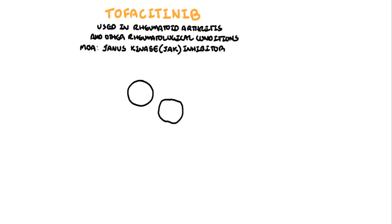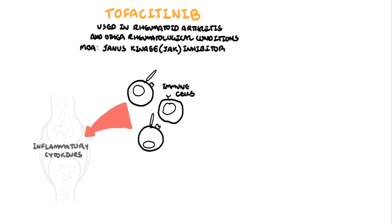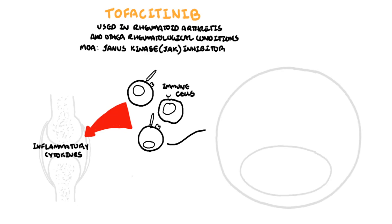Immune cells such as macrophages, monocytes and T cells play a key role in the pathophysiology of rheumatic diseases such as rheumatoid arthritis. In rheumatological diseases, the JAK-STAT signaling pathway is very important in the production of inflammatory proteins.